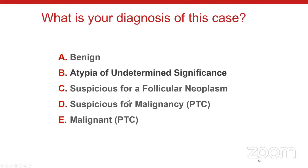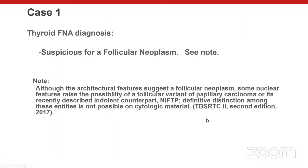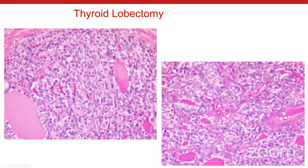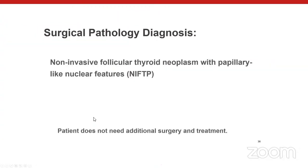Summary of Case 1 features: scant colloid, cellular follicular groups with three-dimensional arrangements and micro-follicles, round nuclei with finally granular open chromatin, and intranuclear inclusions with grooves. After the second Bethesda edition, we call this 'Suspicious for Follicular Neoplasm' with the explanatory note: 'Although the architectural features suggest a follicular neoplasm, some nuclear features raise the possibility of a follicular variant of PTC, including the recently described indolent counterpart NIFTP; definitive distinction is not possible on cytologic material.' Lobectomy showed a well-circumscribed NIFTP — patient needed no additional surgery.